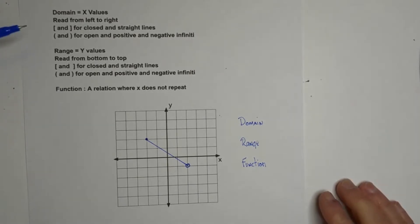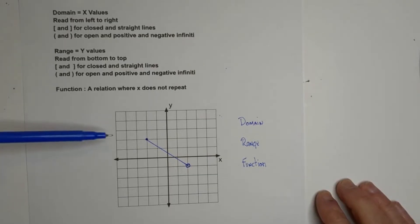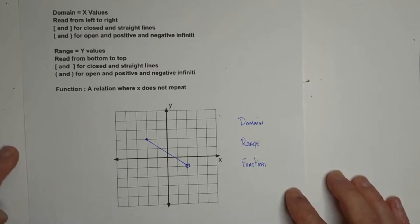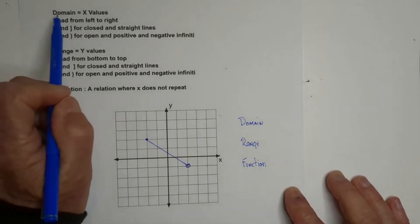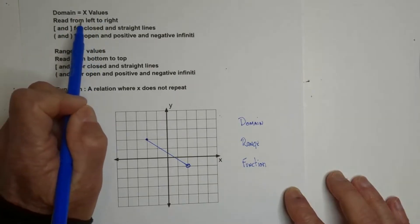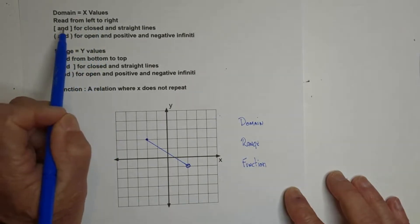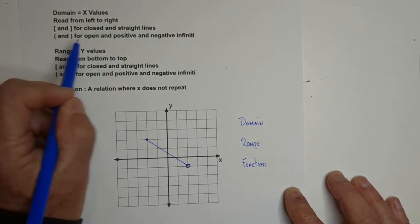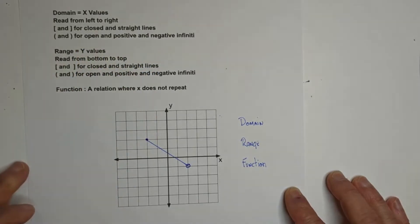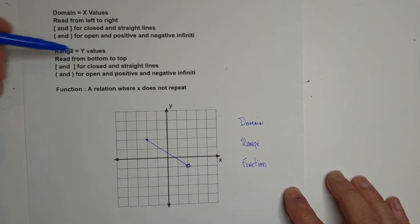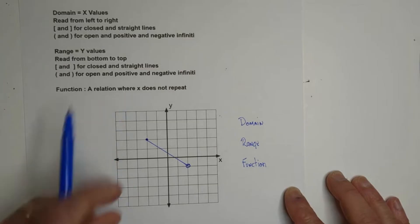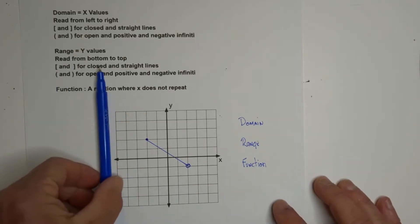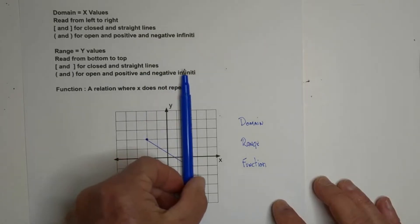Welcome to Moving Math and Science. In this video, let's work on finding the domain, the range, and then if it's a function from a graph. Remember, the domain are the x values — you read from left to right. Use brackets whenever you have a closed symbol, circle, or straight lines, and parentheses for open and for positive and negative infinity. The range are your y values, and the same rules apply. A function is where x does not repeat, and you can use the pencil test — move past it and it can't touch in two places.